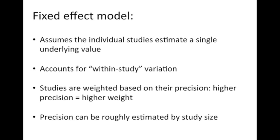So a fixed effect model assumes that the individual studies estimate a single underlying value. It accounts for within study variation, and studies are weighted based on their precision. Higher precision equals higher weight. Precision can typically be roughly estimated by study size.